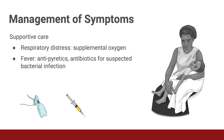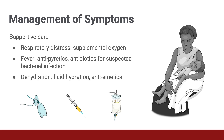For high-risk patients, consider empiric antibiotics to cover for other common severe illnesses. GI symptoms are common in children with COVID and can result in dehydration, especially when they are unable to tolerate PO or have excessive fluid losses. These children may require IV hydration if they are unable to tolerate oral rehydration. Anti-emetic medications, if available, should be administered to help reduce discomfort and allow for oral rehydration.